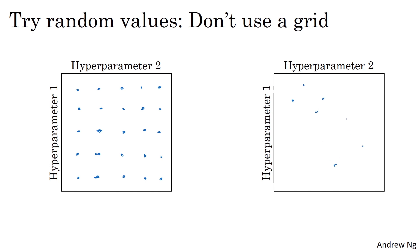So go ahead and choose maybe the same number of points, 25 points. And then try out the hyperparameters on this randomly chosen set of points. And the reason you do that is that it's difficult to know in advance which hyperparameters are going to be the most important for your problem.